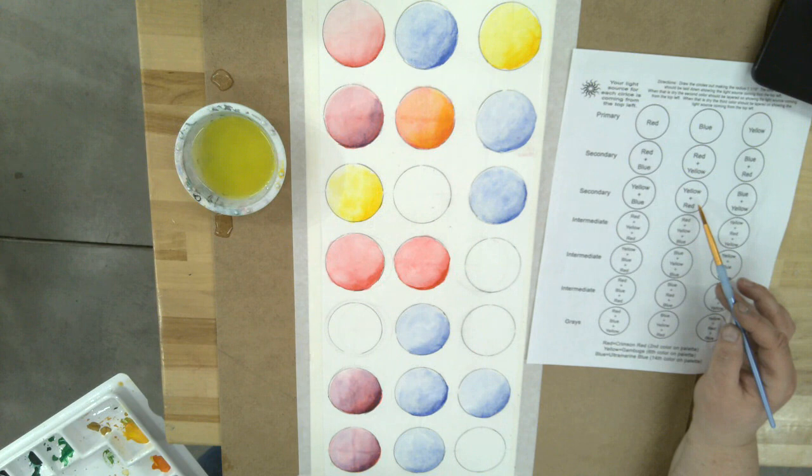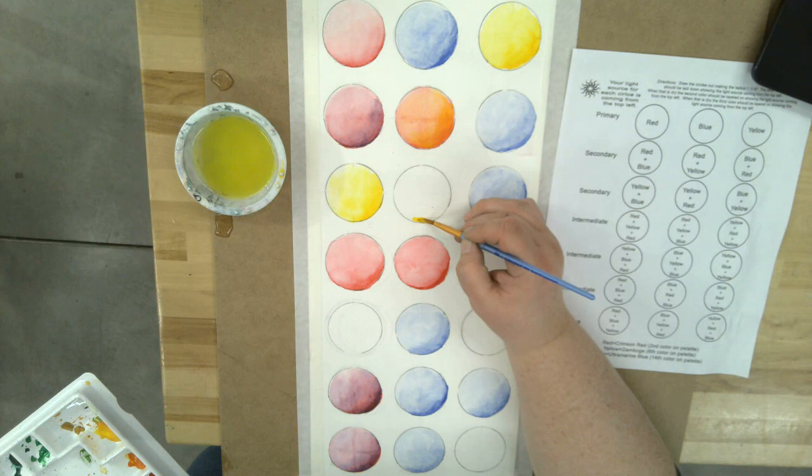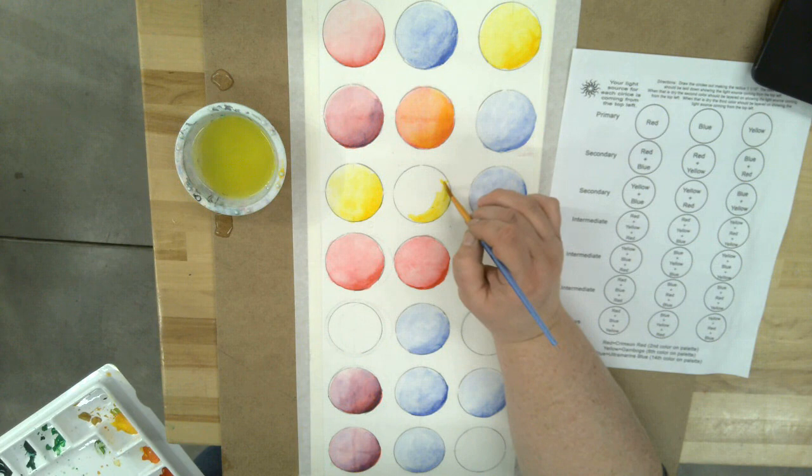The next one is yellow and eventually we're gonna glaze over red. We'll do that in another video. So darker on the edge here, then dip it in the water.